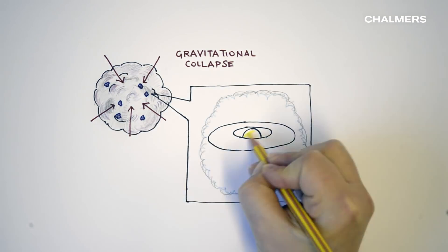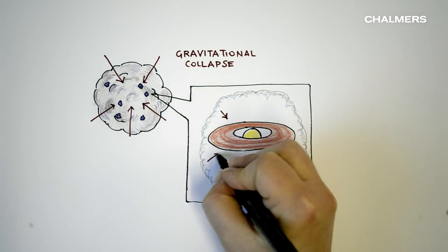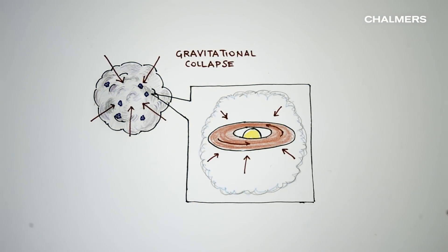In the dense cores, gravity attracts the mass towards the center and because of the initial rotation of the cloud, this process is via a disk, the accretion disk.